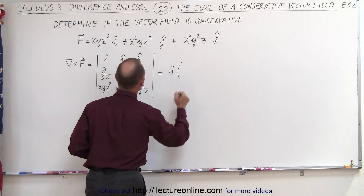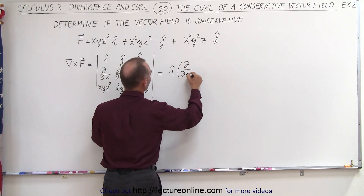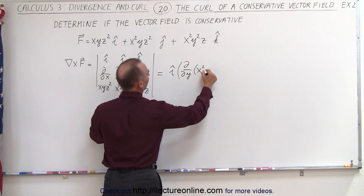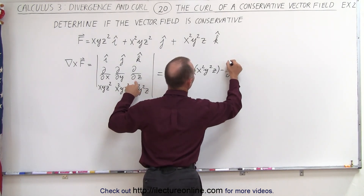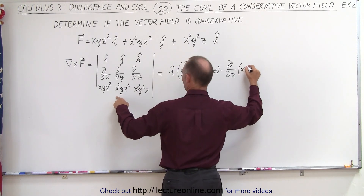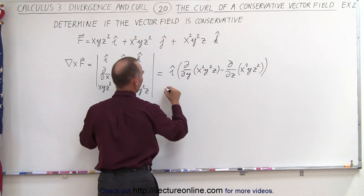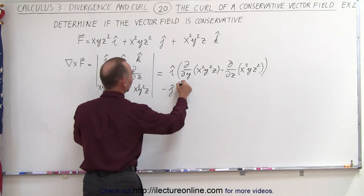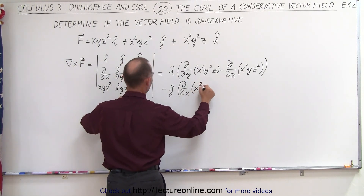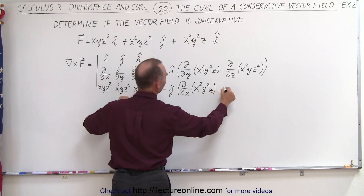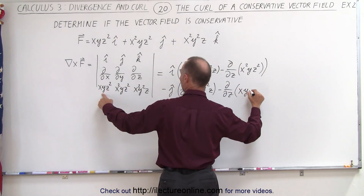We take i and multiply that times the partial with respect to y of this quantity right here. So the partial with respect to y of x²y²z, minus the partial with respect to z of x²yz². And then minus j — we alternate signs — so we take the partial with respect to x of x²y²z minus the partial with respect to z of xyz².